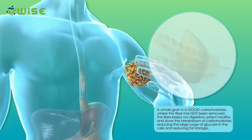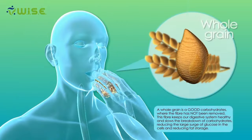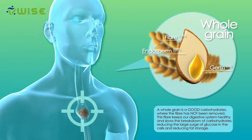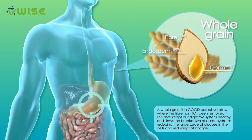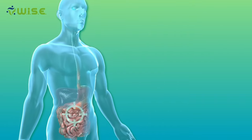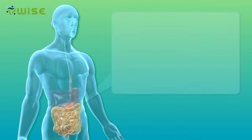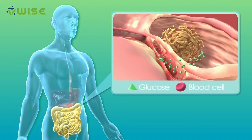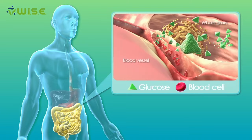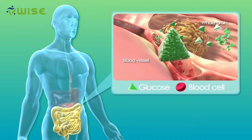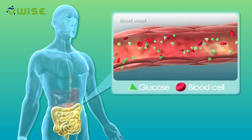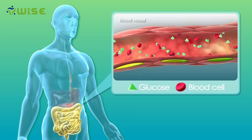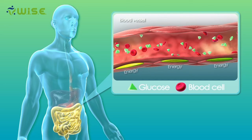When you eat a whole grain food, it goes down into the mouth, into the stomach, then into the upper intestines. Because of the fiber, it is absorbed slowly into the bloodstream as blood sugar or glucose. The glucose moves into the cells and is burned for energy.